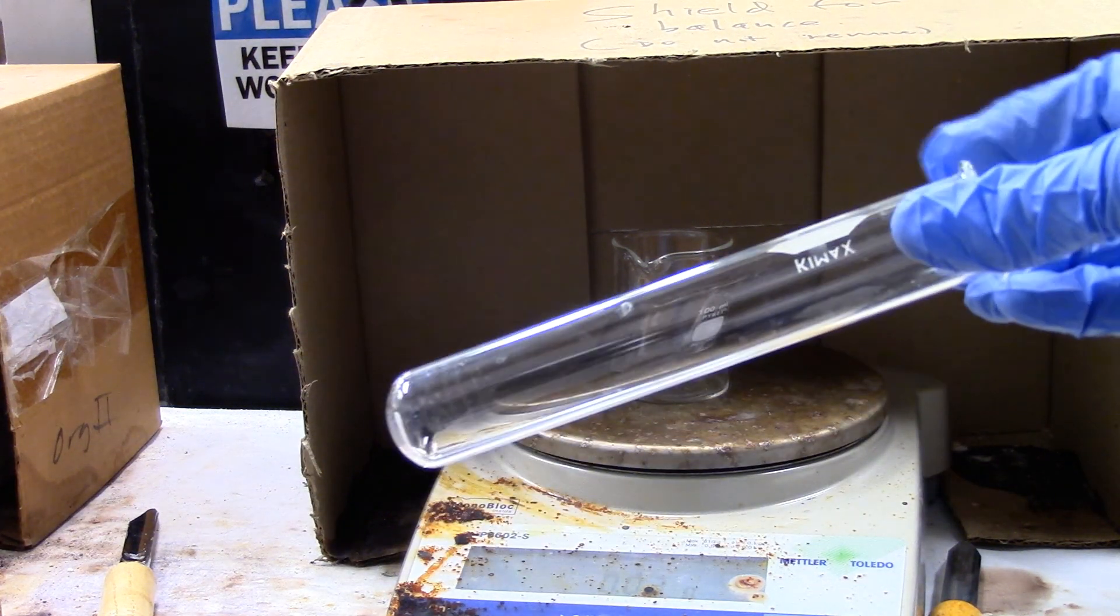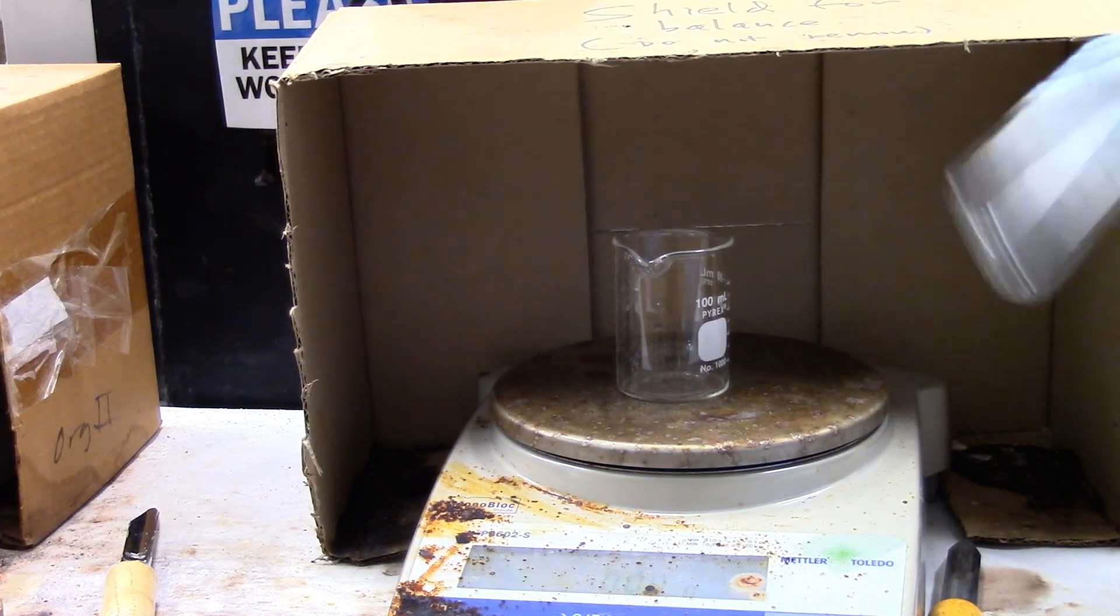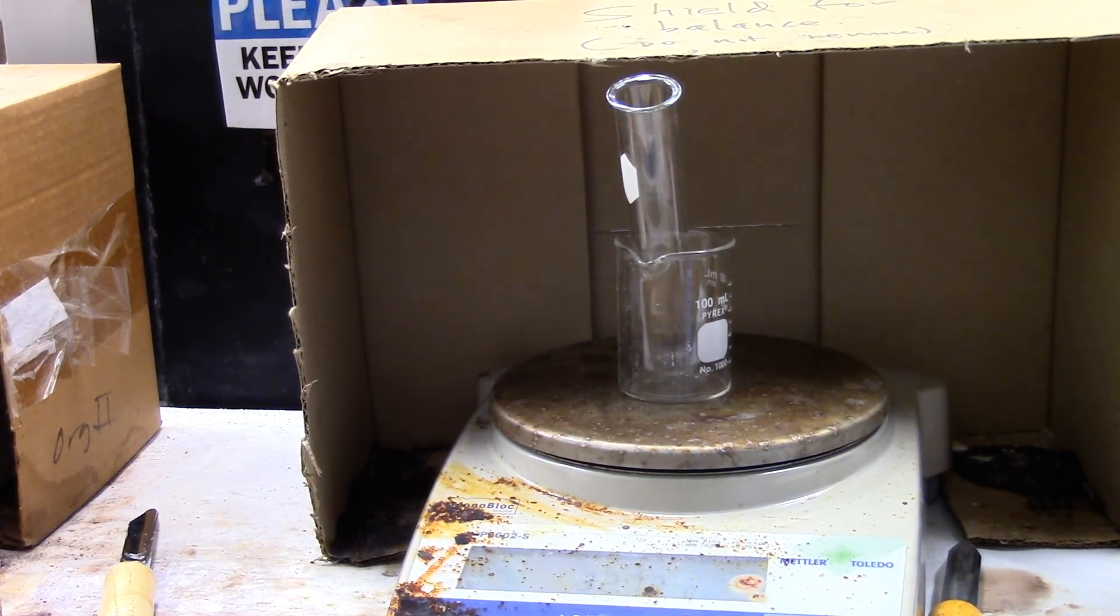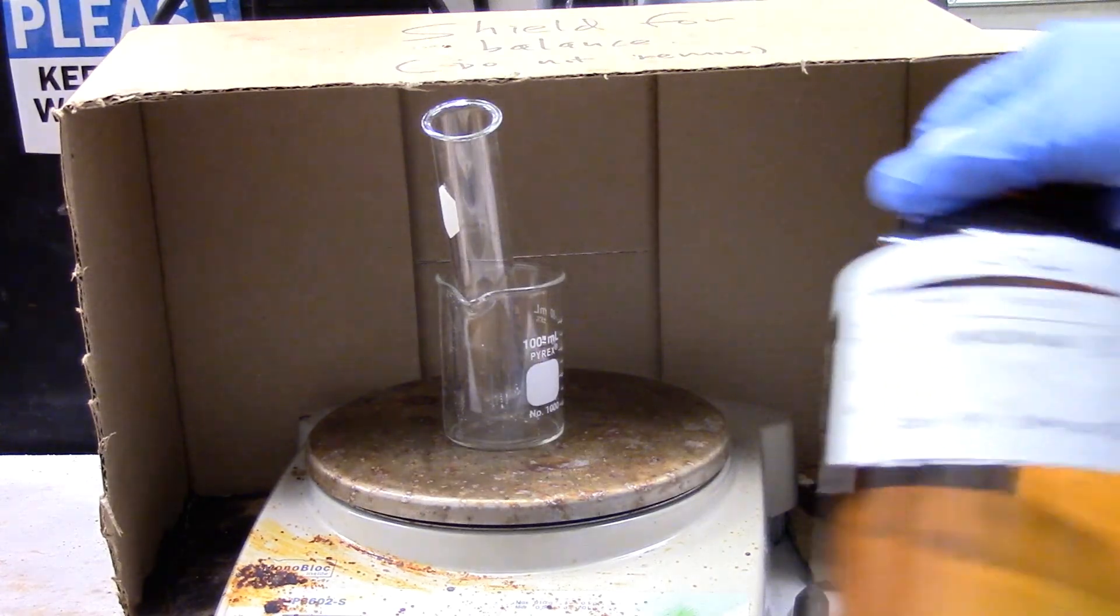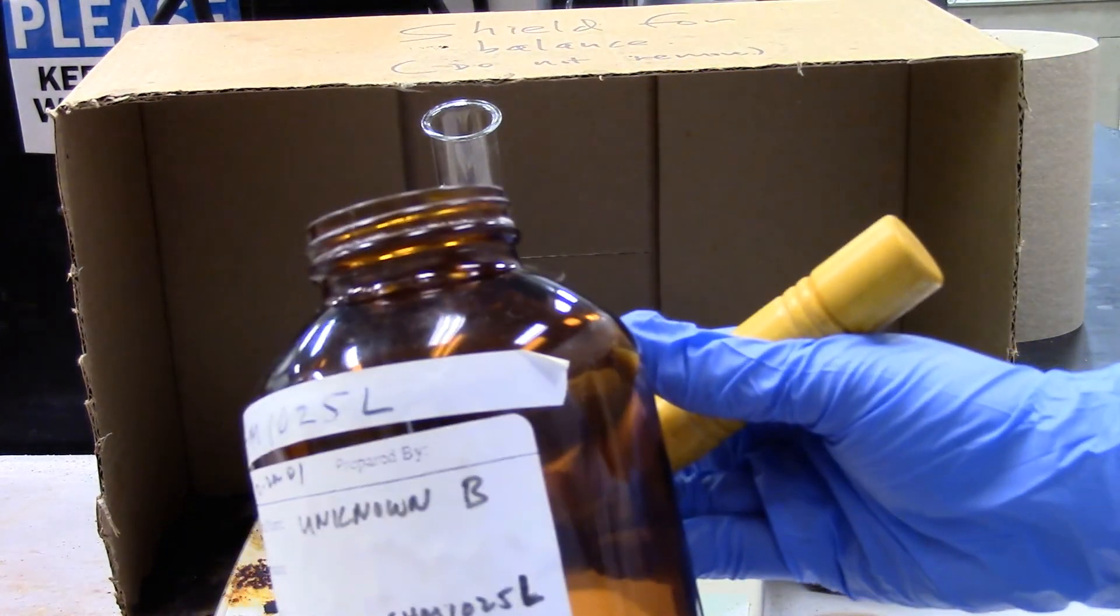So for the unknown, I'm going to measure the empty test tube. Tare the balance with the beaker, and then place the test tube in the beaker. I'm going to add some unknown. I'm using unknown B.